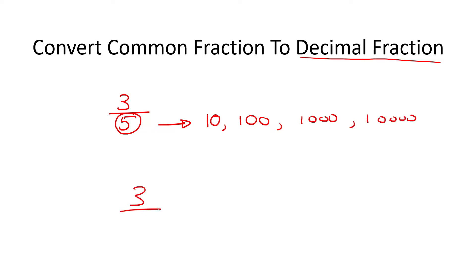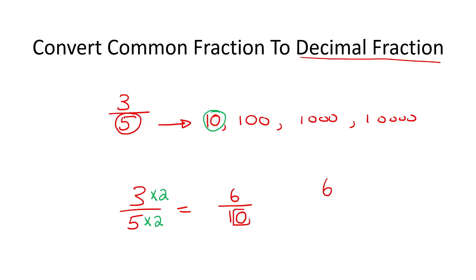So if we have 3 over 5, the easiest would be to change it to a 10, so I just multiply by 2 — but what I do at the bottom I have to do at the top — and that gives us 6 over 10. Now take the number 6 and look at how many zeros you have. You have 1, so you take the decimal from the back and move it 1 place. Put your decimal there, and there's your answer. Remember if there's nothing in the front, just add a 0.